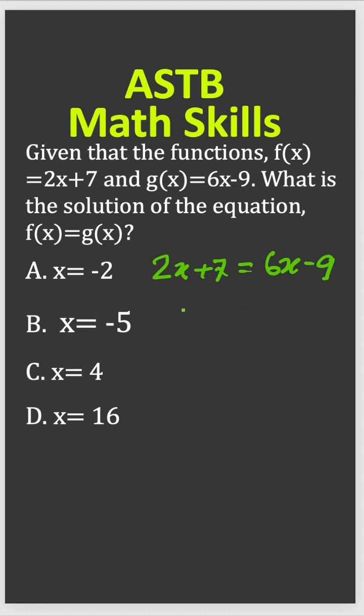So what you have to do is simple solving equation: subtract both sides by 2x here. 2x cancel out, so that gives you 7 = 4x - 9.